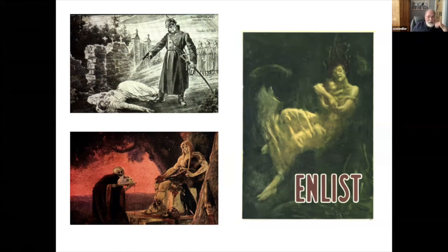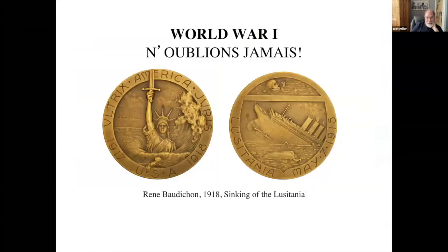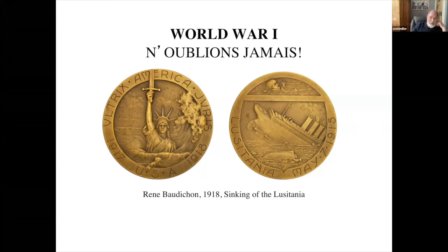And then at the bottom, even more in your face — death holding the skull — really conveying just how bad war and death and destruction is. Here we have a French medal from 1918, also obviously for the American involvement. The Lusitania image is pretty straightforward; the little girl at the top who is drowning is not quite as nice and friendly as some other images. And here we see the Statue of Liberty now prepared for war with the sword.